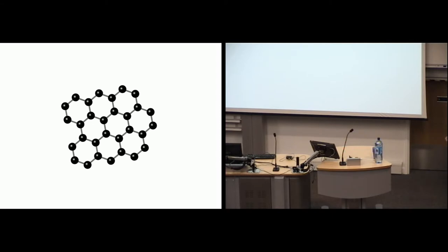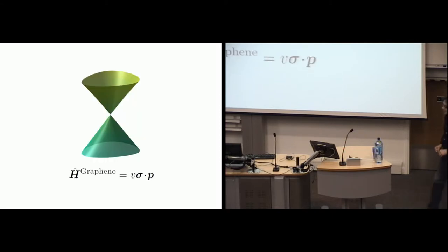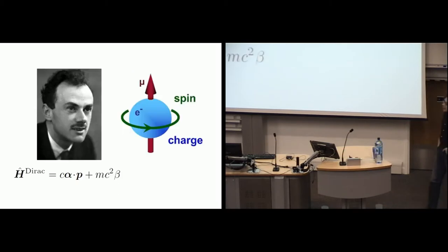First of all, electrons in graphene are governed by an equation that is very similar mathematically to another one that was written down by Paul Dirac long time ago in 1920s. The interesting point is that Paul Dirac wrote this equation to describe relativistic particles with spin. Relativistic means moving with a velocity close to speed of light.